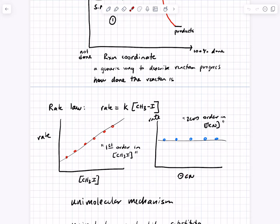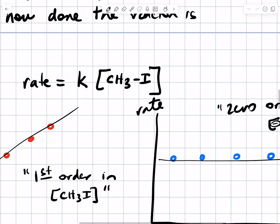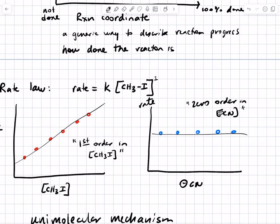Because the nucleophile isn't involved in that rate-determining step, we would expect to see that the reaction was independent of nucleophile concentration. The linear dependence of rate on the amount of methyl iodide means the reaction is first order in methyl iodide — the exponent on the concentration term for methyl iodide is 1. We say zero order in the concentration of nucleophile because you can give it an exponent of zero, communicating that the reaction is independent of nucleophile.